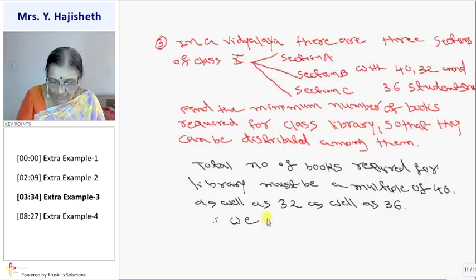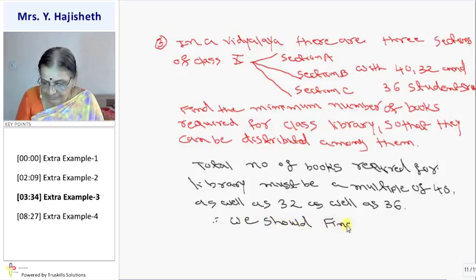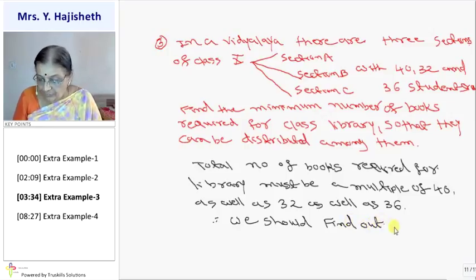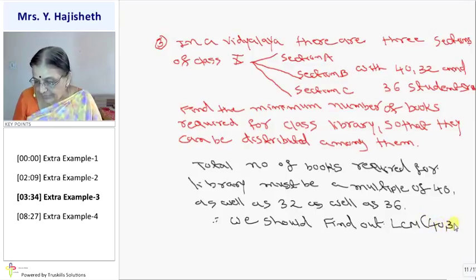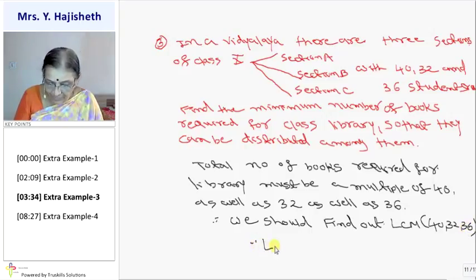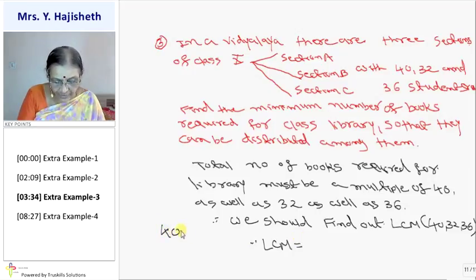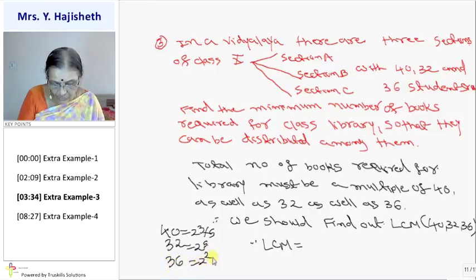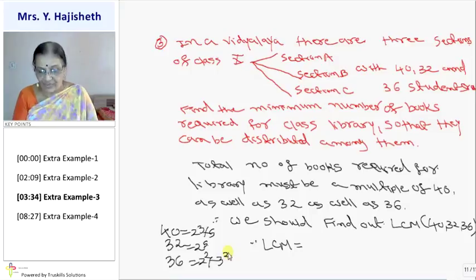Therefore, we should find out LCM. That judgment is very important. 40, 32 and 36. We should find out LCM of three numbers. LCM of three numbers, you apply prime factorization method. 40 can be expressed as 2 cubed into 5. 32 can be expressed as 2 raised to 5. 36 can be expressed as 2 raised to 2 into 3 raised to 2. I have written prime factorization.